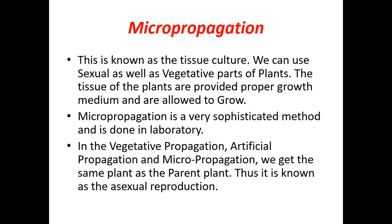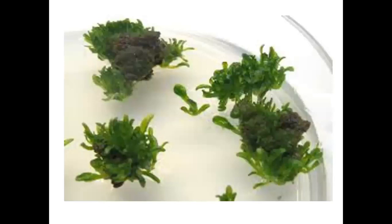Micropropagation is a very sophisticated method done in the laboratory. In vegetative propagation, artificial propagation, and micropropagation, we get the same plant as the parent because we are making a clone — essentially using one parent with no merging of characters. The tissue slowly grows and spreads across the culture plate.